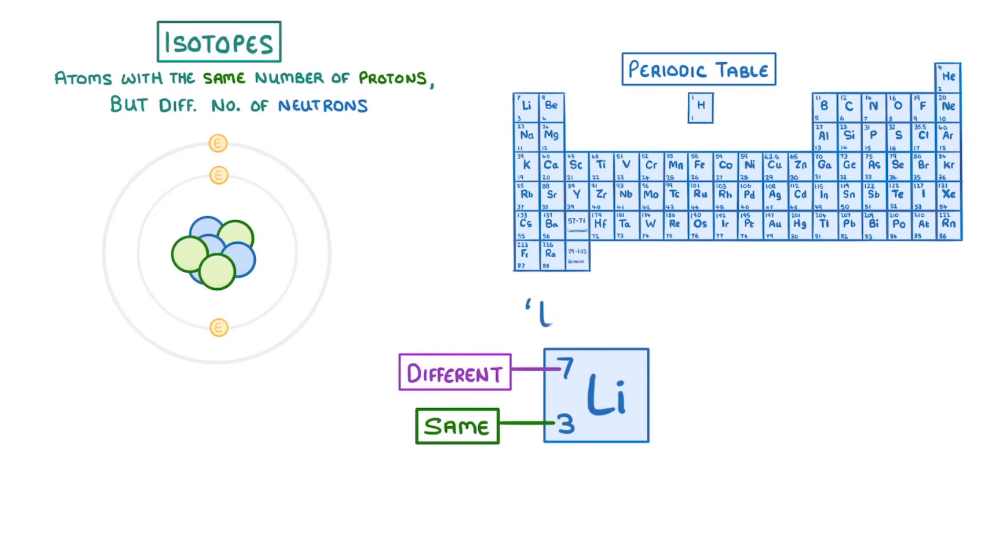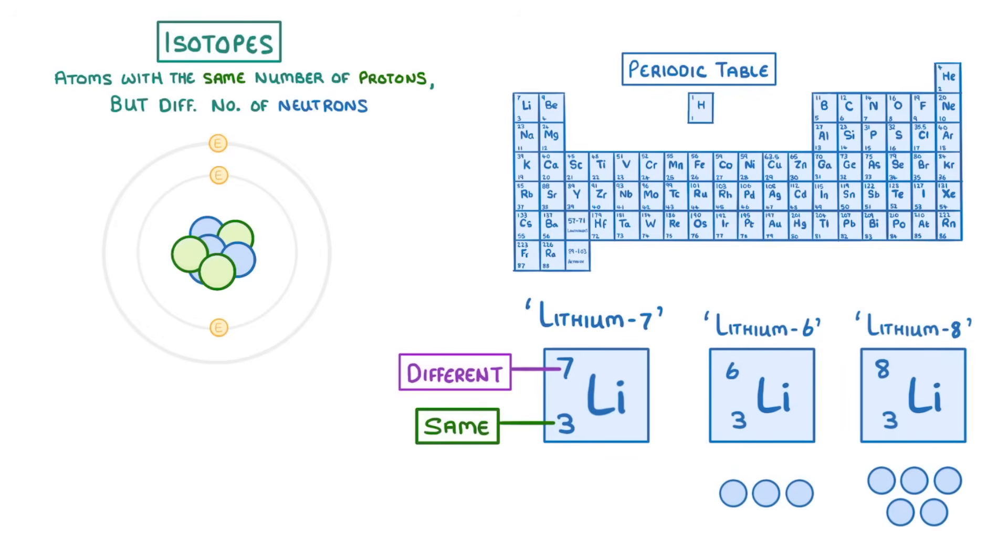For example, as well as lithium-7, which we've been looking at so far, we can also get lithium-6, which has three neutrons, and lithium-8, which has five. So these three would all be classed as isotopes of lithium, because they all have the same number of protons, but different numbers of neutrons.